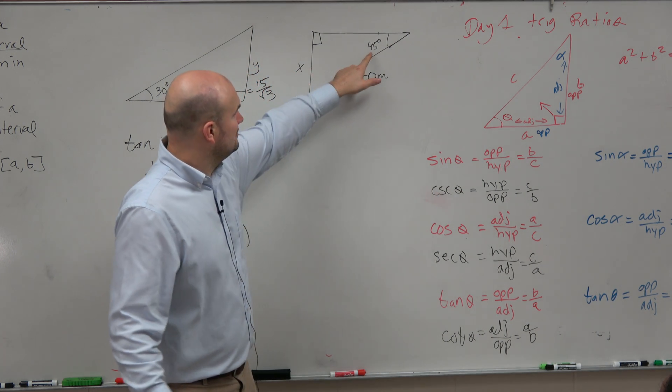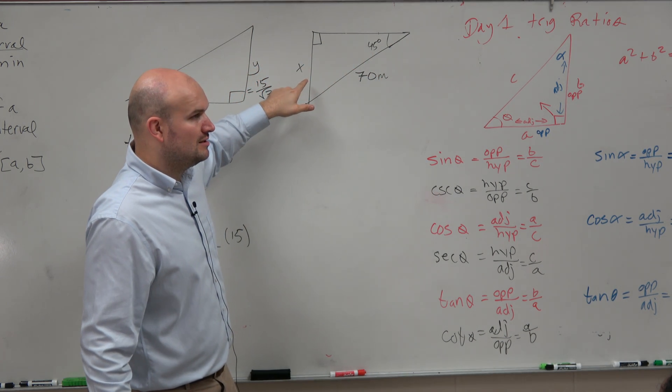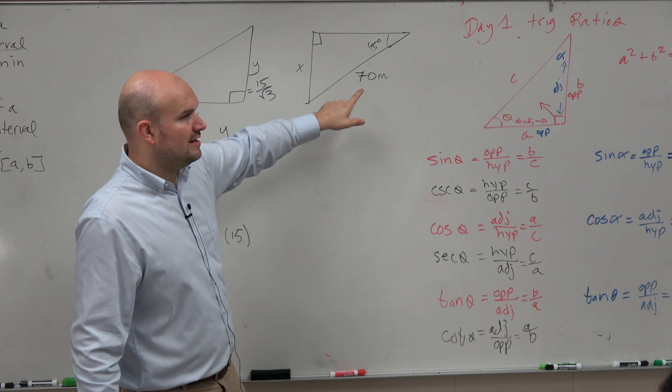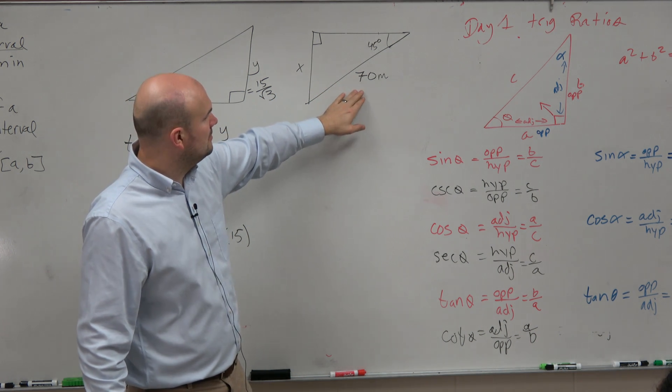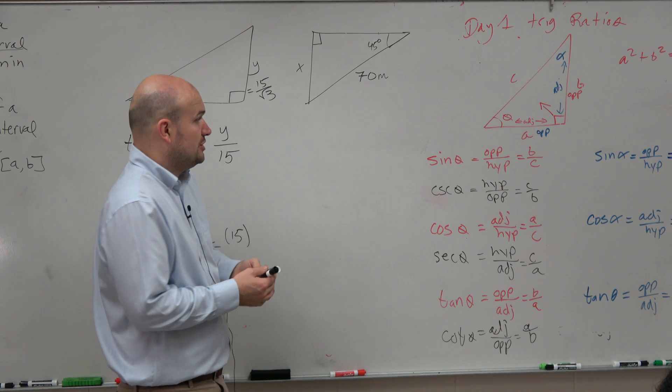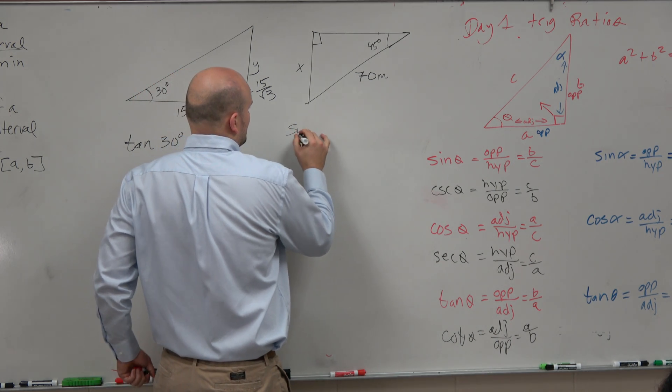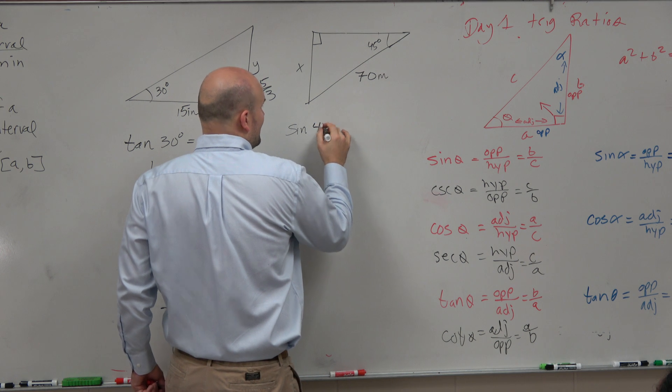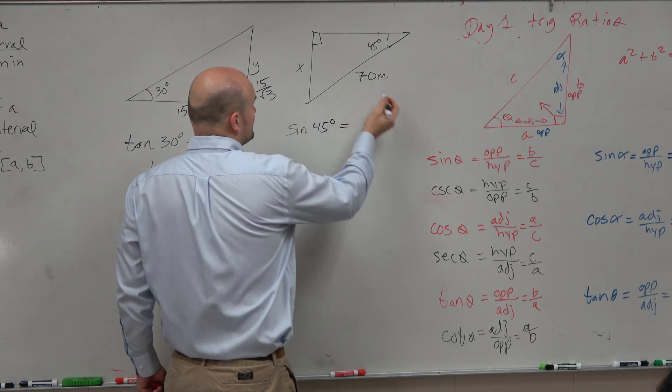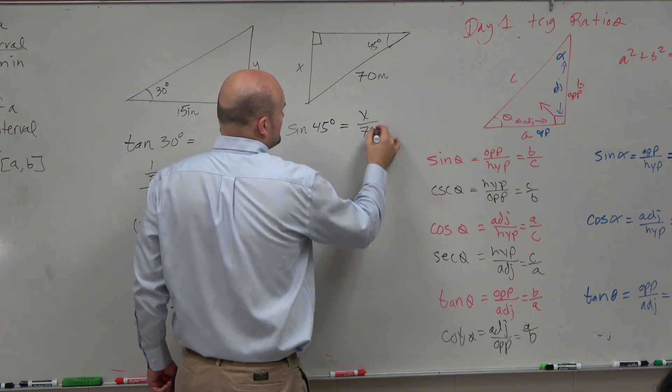Here's my angle. This is going to be your opposite. And then, Michael, this would be your hypotenuse, right? So therefore, the trigonometric function we're going to use is sine. So we're going to say sine of 45 degrees is equal to x over 70.